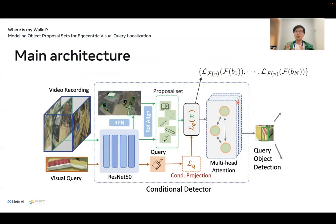This figure shows our main model architecture. We have the input of a visual query — basically the object we are looking for — and we also have the video recording, which works as episodic memory in local storage. We first leverage ResNet-50 as our visual backbone to encode visual information, and apply a region proposal network to predict a set of proposals from each single frame of the video recording.